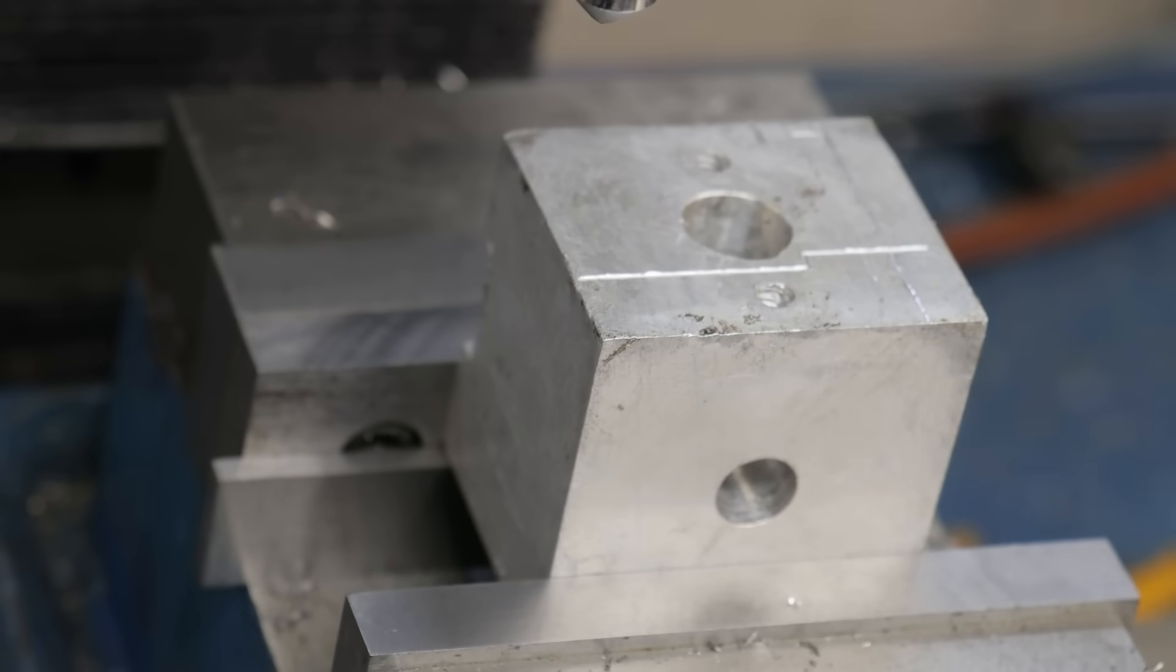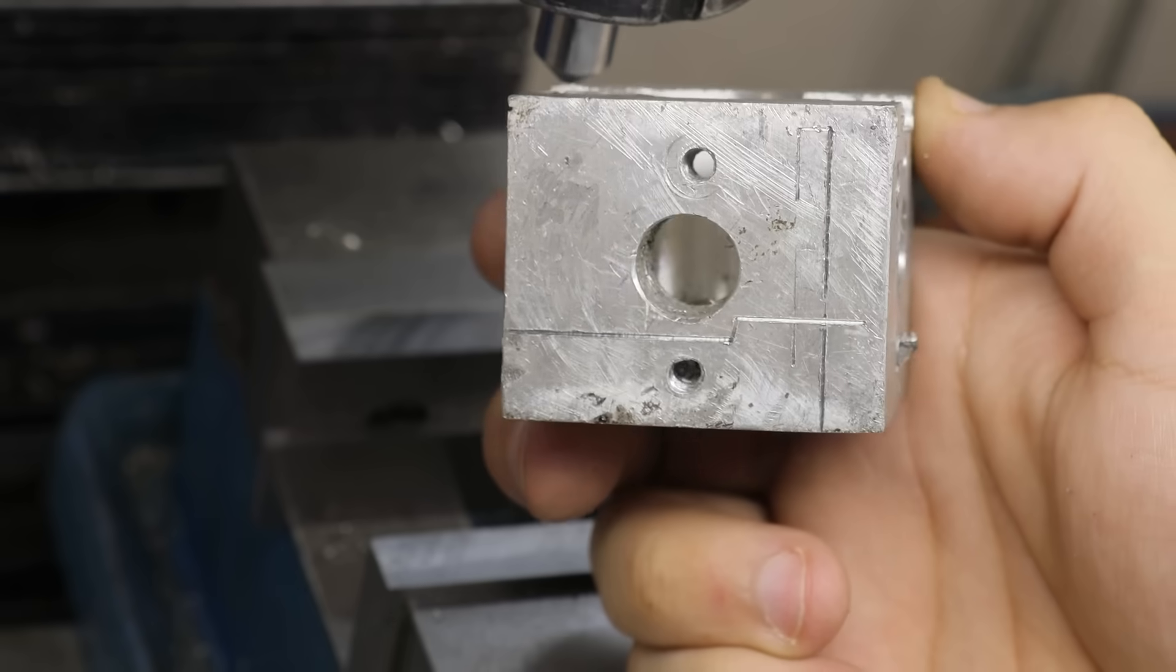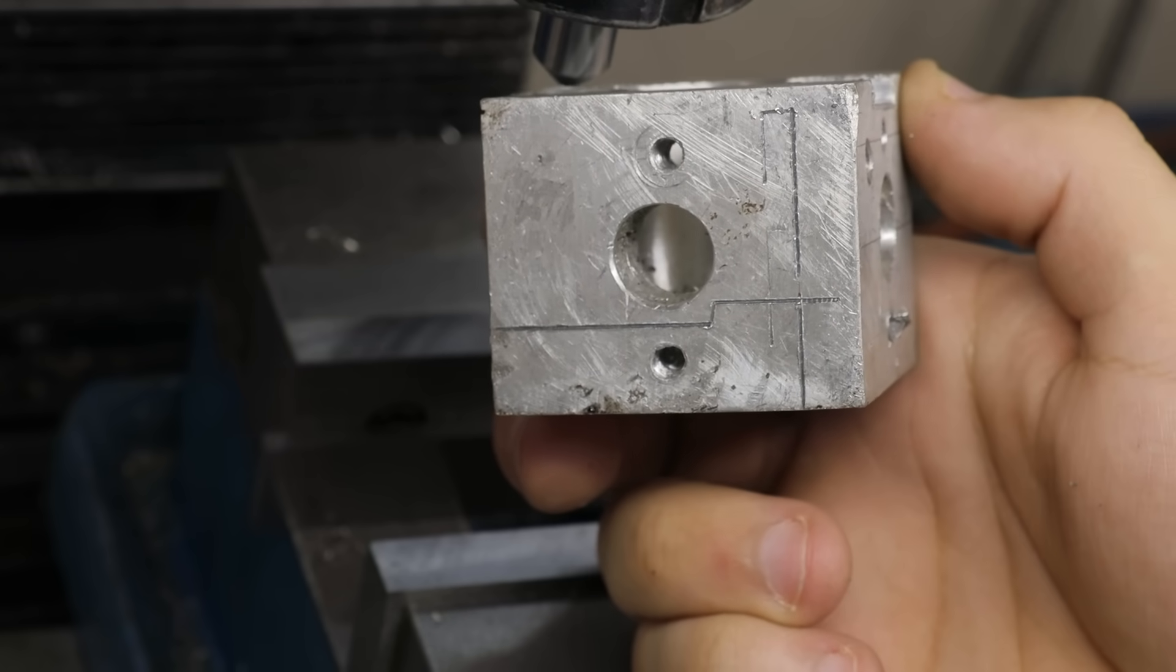The aluminum is a bit gummy and it's leaving quite a big burr, but it's engraving, it's a very clean line, and the diamond hasn't popped out.